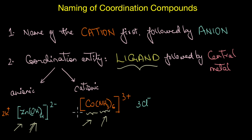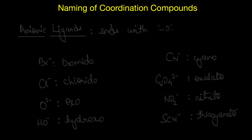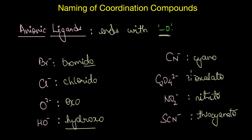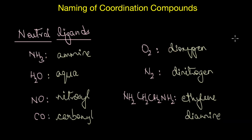Ligands can be of different types — some are anionic in nature while others are neutral molecules, so their naming differs accordingly. When we have anionic ligands, the name will always end with '-o'. For example, chloride ligands are named 'chlorido', bromide ligands are 'bromido', and the hydroxy group is 'hydroxo'. It doesn't matter whether the ligand is bidentate or polydentate — as long as it is anionic, the name ends with '-o'.